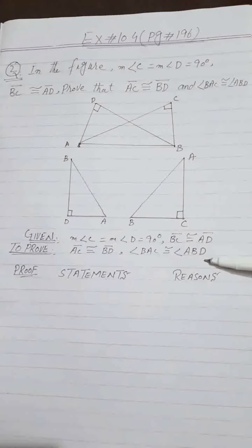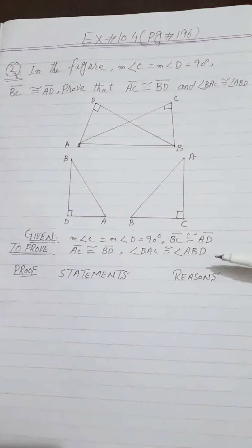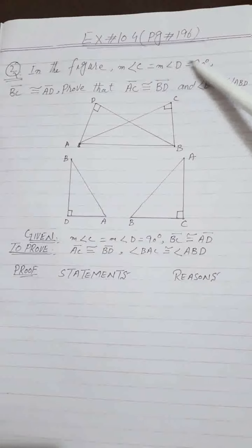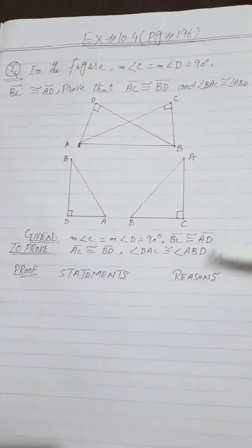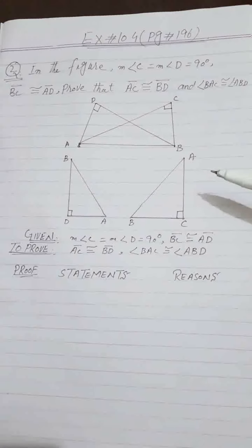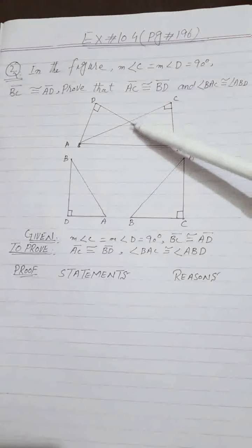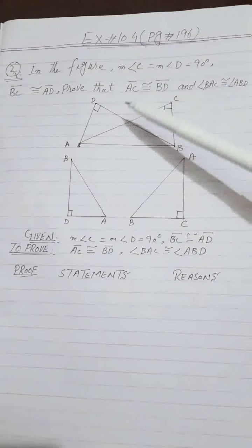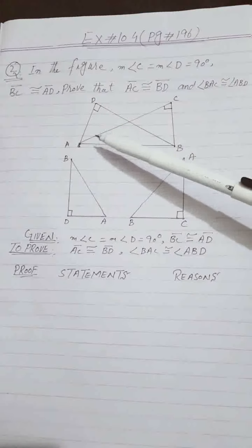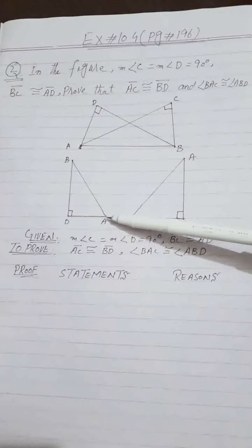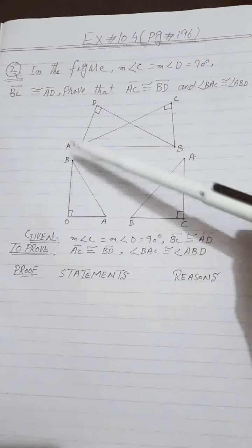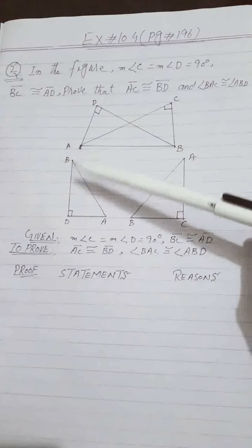I have already written the proofs for your convenience so that the video length is manageable. The given and the first statement are similar to question number 1. I have done extra work for you — these triangles overlap, so I have separated them. The triangles to be proved congruent are ADB and BCA.